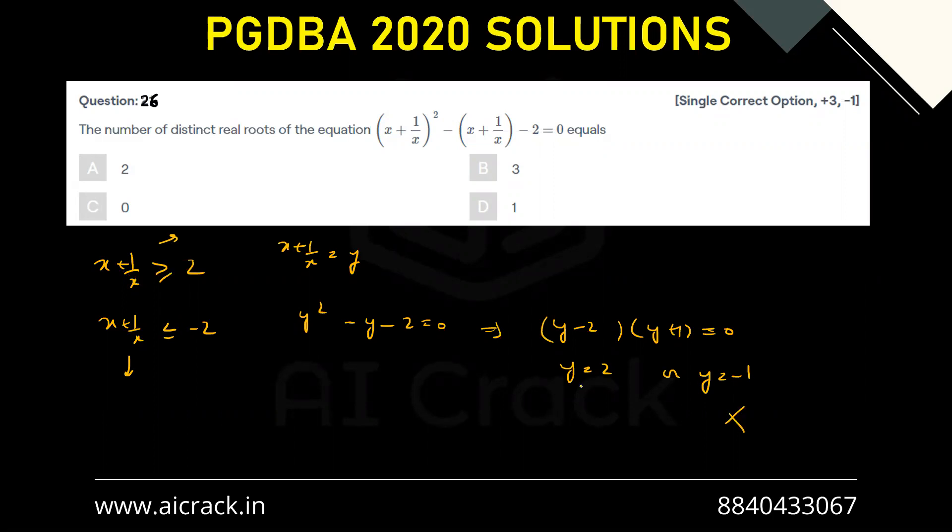So this is not possible because it's always less than or equal to -2. So basically y equals to 2, so x + 1/x should be 2, and for that case x should be 1. So only one real root is possible, that is D.